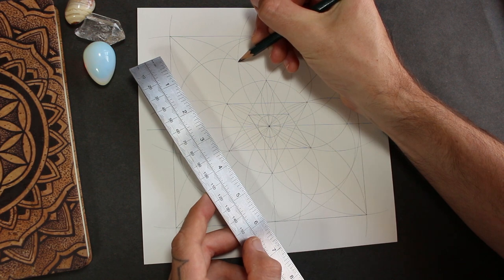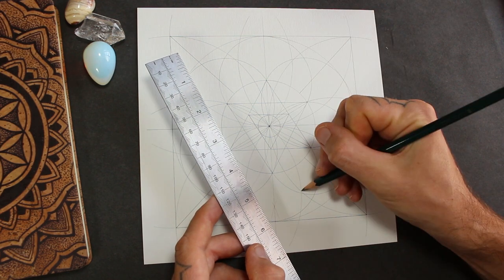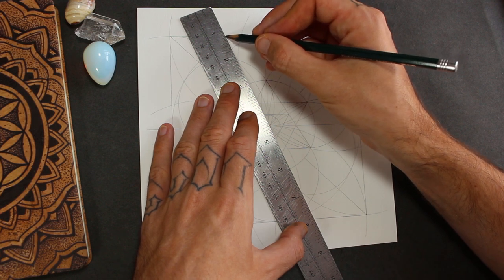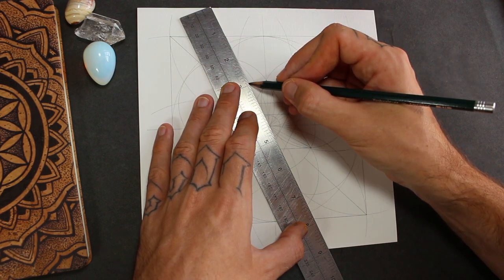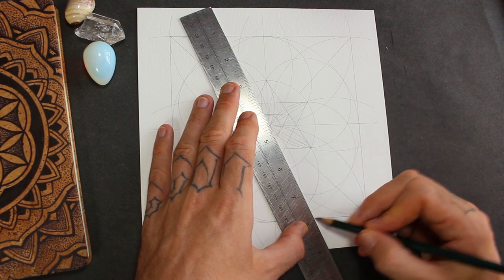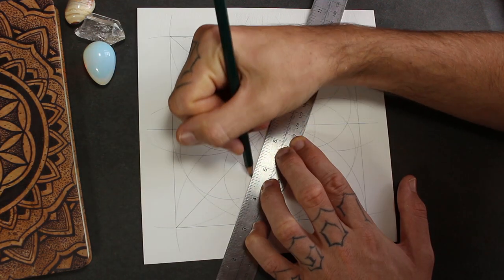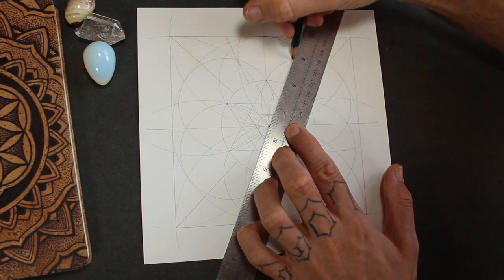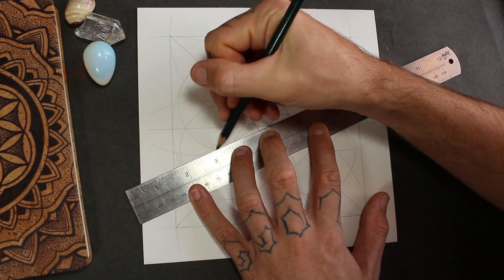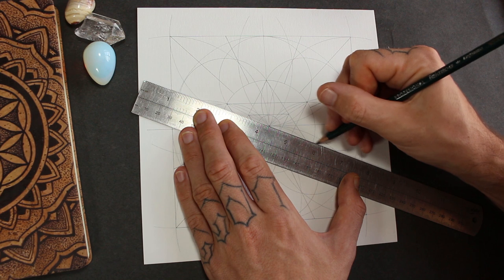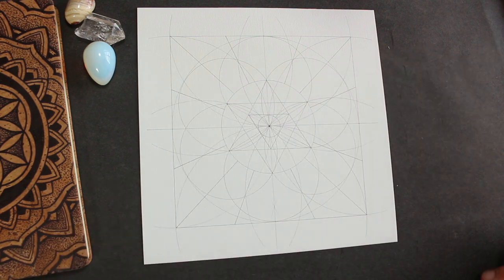So I'm going to take that point. I'm going to go straight through the center to its opposite point. But again, we're only going to draw the line outside of the center circle. Okay, now that's divided into 16.